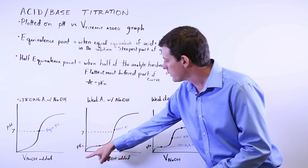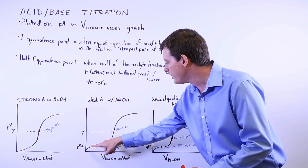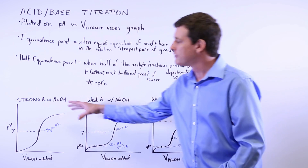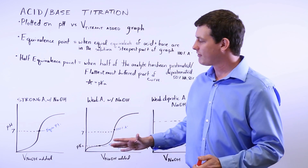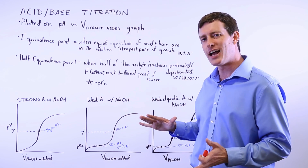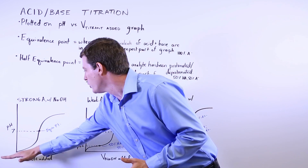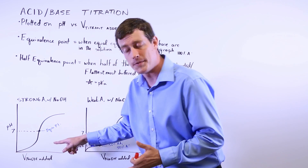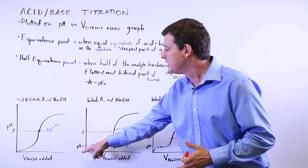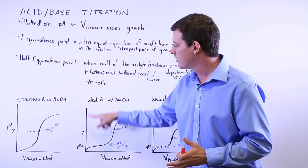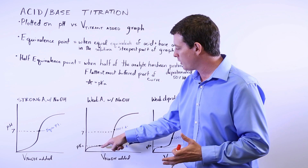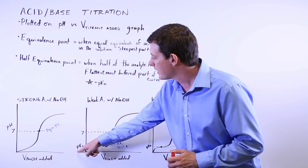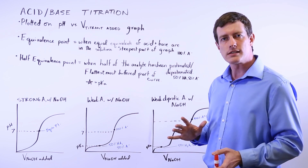This second graph has a very flat point, and that is the half equivalence point. You could argue that the first graph also has a half equivalence point, but because the pKa of a strong acid is actually below zero, it's impossible to plot on a pH scale and gets cut off. In this weak acid graph, the pKa is somewhere between 0 and 14, so this flat region where you find the half equivalence point is exactly the pKa of your weak acid.